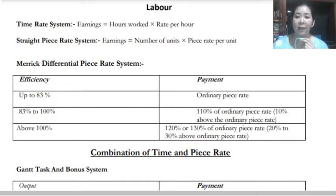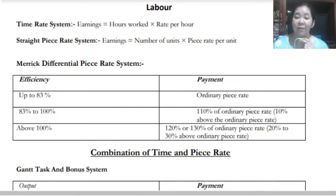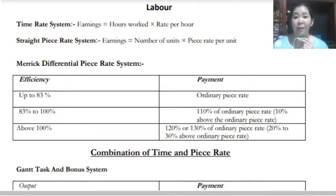The entity can also use the differential piece rate system — the Merrick differential piece rate system. They can use this basis for paying their workers based on their efficiency. If they work at 83% efficiency or below, their rate is based on the ordinary piece rate. If efficiency is between 83 and 100%, they receive additional incentive at 110% of the ordinary piece rate. If efficiency is above 100%, greater incentives are given, like 120% or 130% of the ordinary piece rate.